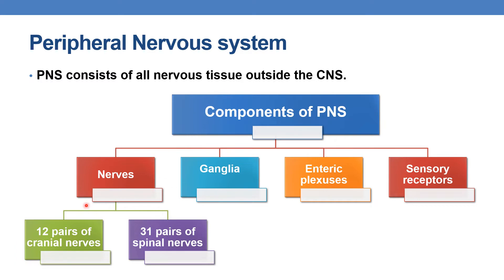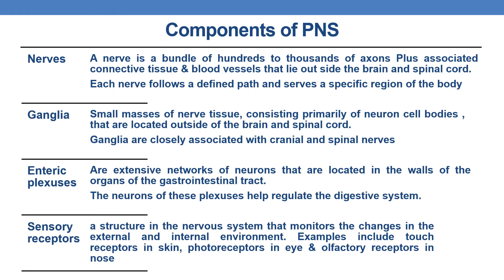When it comes to nerves, there are 12 pairs of cranial nerves and 31 pairs of spinal nerves. A nerve is a bundle of hundreds to thousands of axons, plus associated connective tissue and blood vessels that lie outside the brain and spinal cord. Each nerve follows a defined path and serves a specific region of the body.